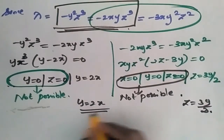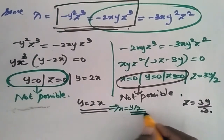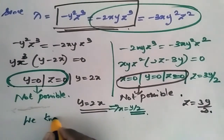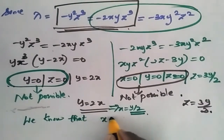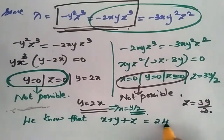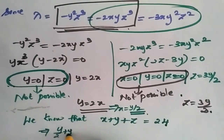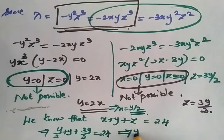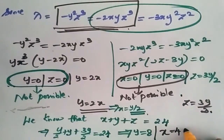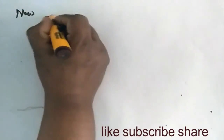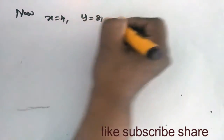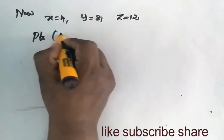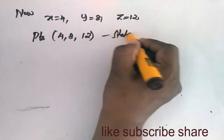This implies X is equal to Y by 2. We know that X plus Y plus Z is equal to 24. Therefore Y by 2 plus Y plus 3Y by 2 is equal to 24, which implies Y is equal to 8. So X is equal to Y by 2 equal to 4, and Z is equal to 3Y by 2 equal to 12. The stationary point is (4, 8, 12).